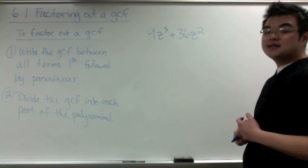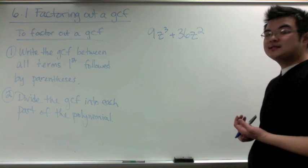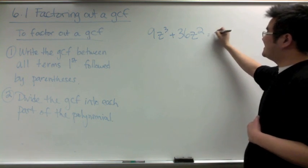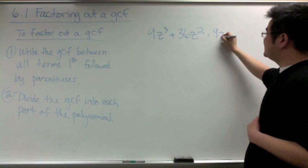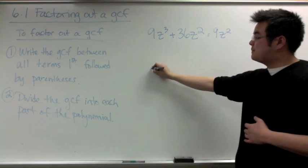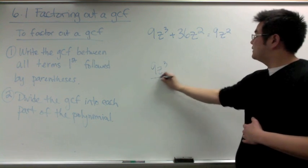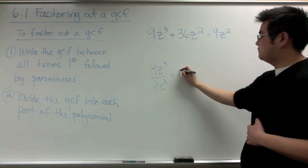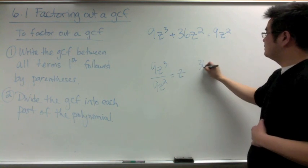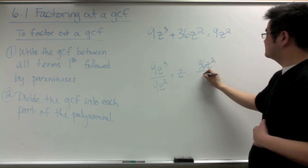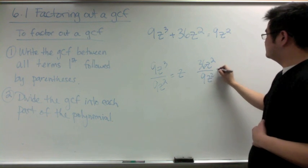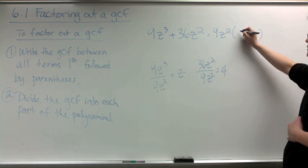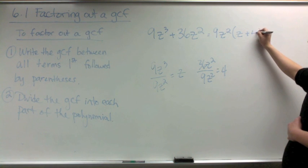In the next example, 9z³ + 36z², the GCF between both parts is 9z². We write both parts, divide by the GCF, and what is left inside the parentheses is z + 4, giving us 9z²(z + 4).